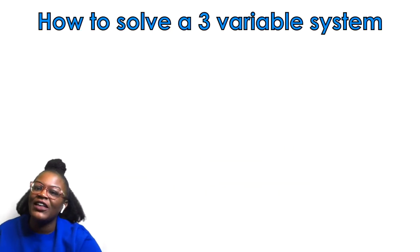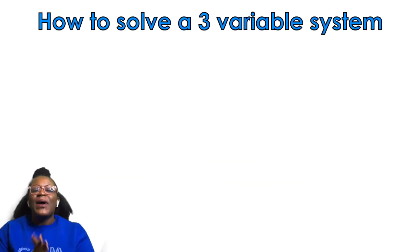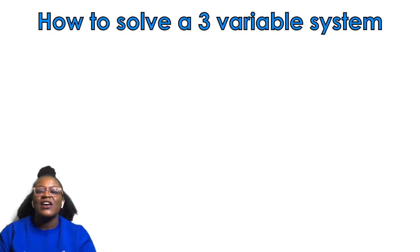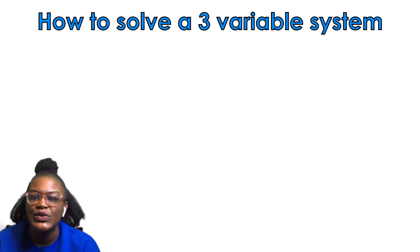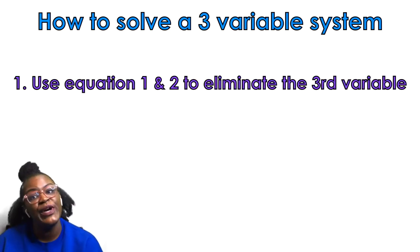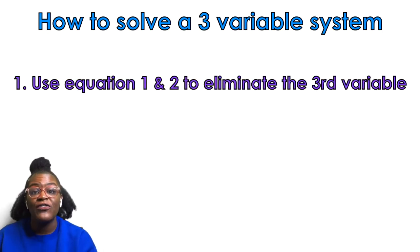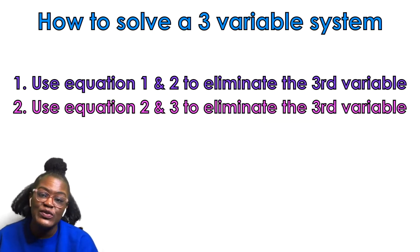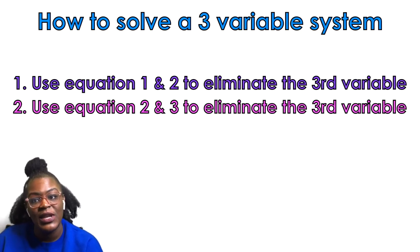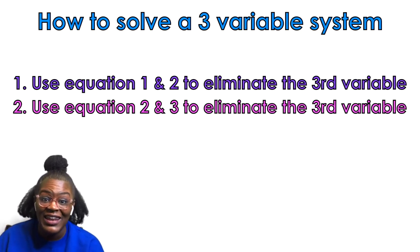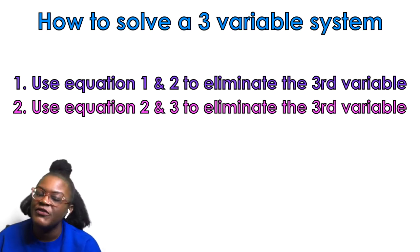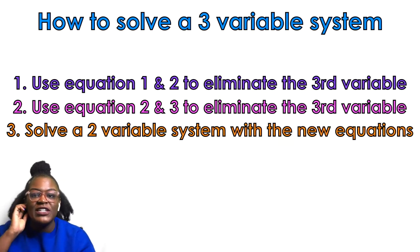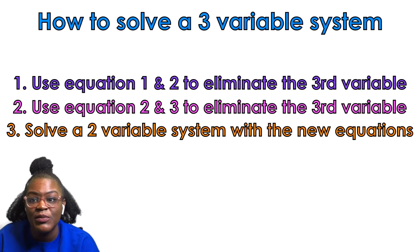We are going to be solving a three-variable system by elimination. So how to solve a three-variable system: you are going to use equation 1 and 2 to eliminate the third variable. Then you're going to use equation 2 and 3 to eliminate the third variable again. You can use other variables, but for simplicity I'm going to say the third variable.